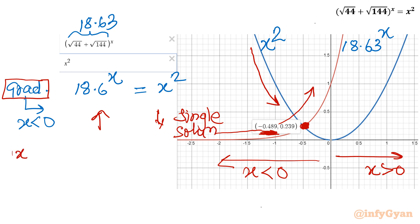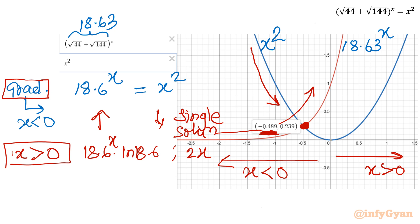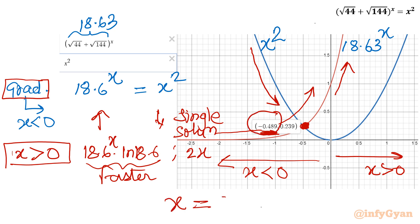For x positive, the derivative of 18.6^x is 18.6^x · ln(18.6), while the derivative of x² is just 2x. Once x is positive, the growth of the exponential function is much faster than the parabolic one. So this intersection won't occur for x positive because the exponential grows more rapidly. Therefore our final answer is x = −0.489, which is the only real solution.